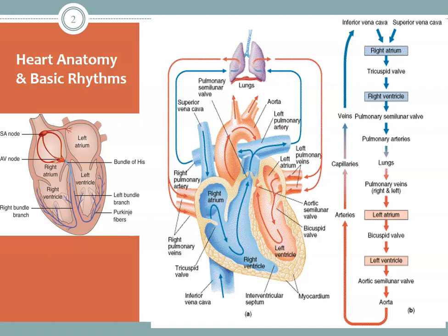On the right side of the heart, blood enters through two large veins — the inferior and superior vena cava — emptying oxygen-poor blood from the body into the right atrium. As the atrium contracts, blood flows from the right atrium into the right ventricle through the open tricuspid valve. When the ventricle is full, the tricuspid valve shuts to prevent backflow. As the ventricle contracts, blood leaves through the pulmonic valve into the pulmonary artery and then goes to the lungs where it is oxygenated.